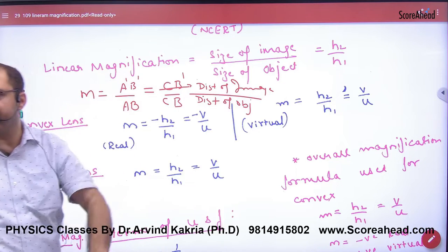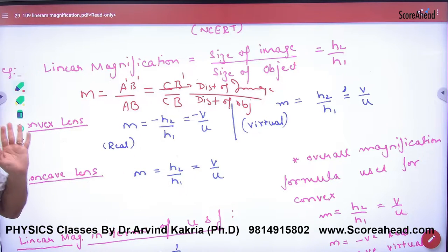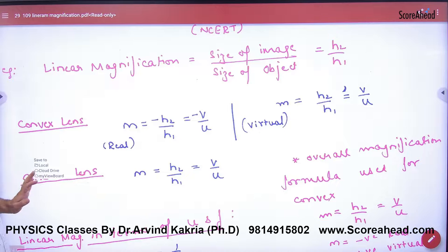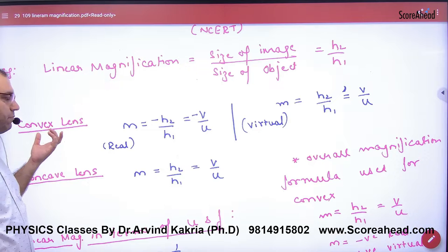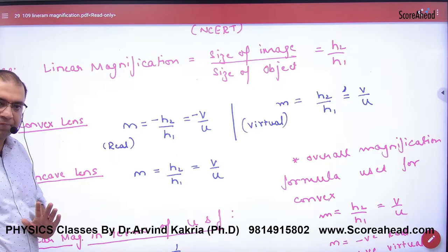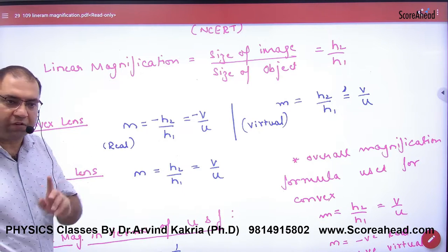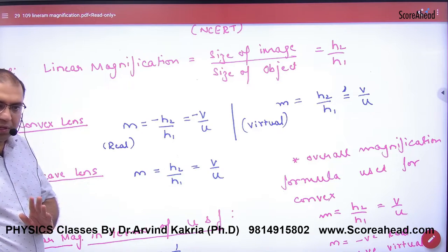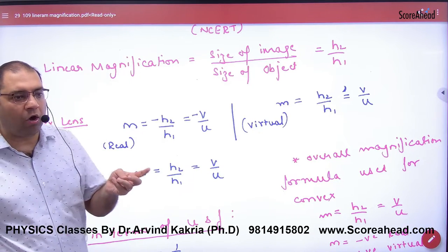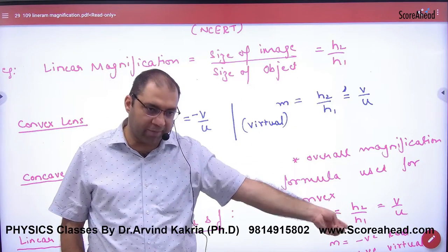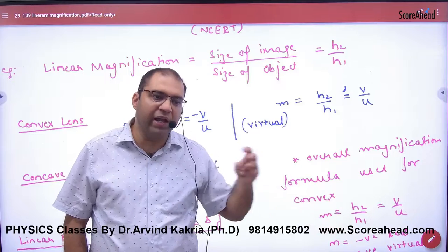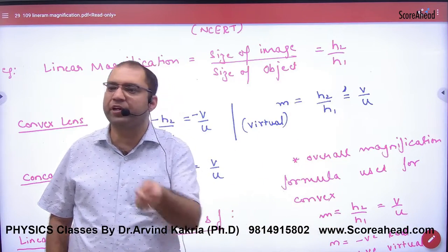So this is the magnification. If we put it with sign convention — for a convex lens there are two cases: real and virtual. For a real image, the object is on the left and the image is on the right. A real image is inverted as compared to the object.